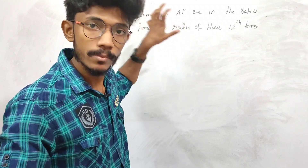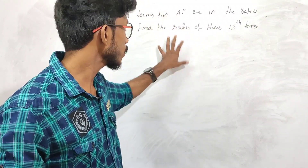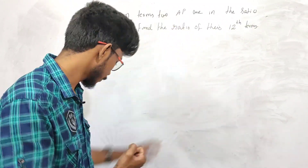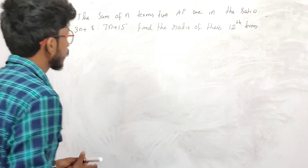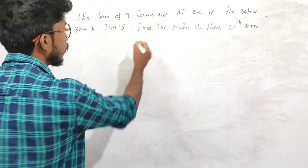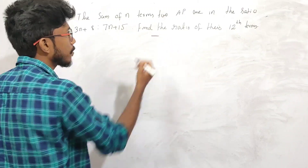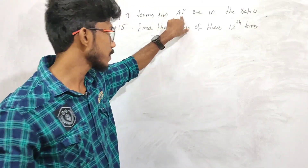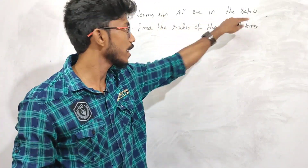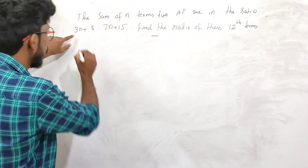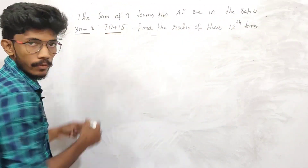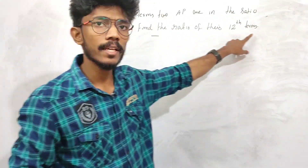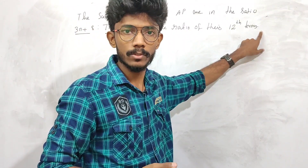The sum of n terms of two arithmetic progressions are in the ratio of 3n plus 8 and 7n plus 5. Find the ratio of their 12th terms.